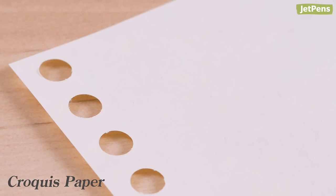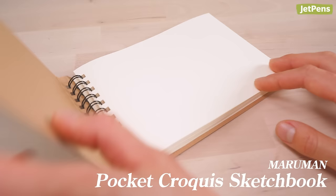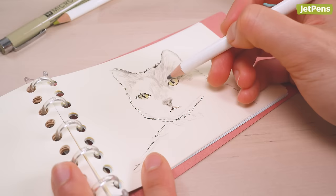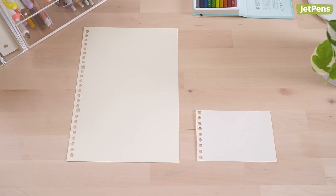Croquis Paper is a cream-colored paper that's also found in some Maruman sketchbooks. At about half the weight of art paper, it works best for pencil sketches. It's available in both B5 and Mini B7 modified sizes.